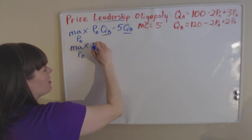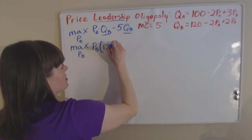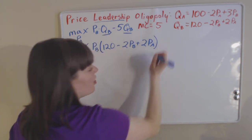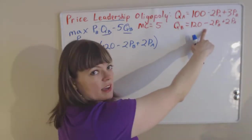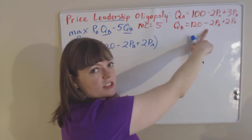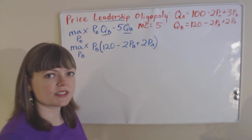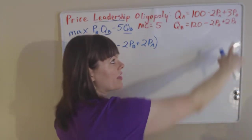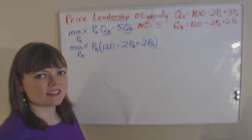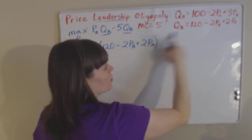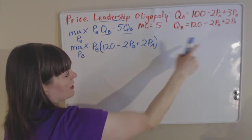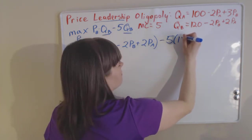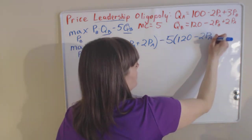We're plugging in firm B's demand function into the maximization problem: QB equals 120 minus 2PB plus 2PA. Notice the coefficient on firm B's own price is negative and the coefficient on firm A's price is positive. That makes sense because when firm B raises their price they sell less — that's the law of demand. And when firm A raises their price, firm B sells more. That's the standard cross-price elasticity at play. So we have price times quantity from the demand function, minus marginal cost of production times quantity, where we again plug in the demand function.